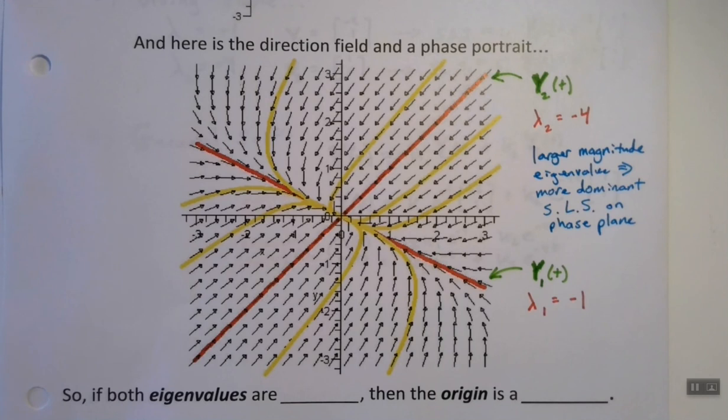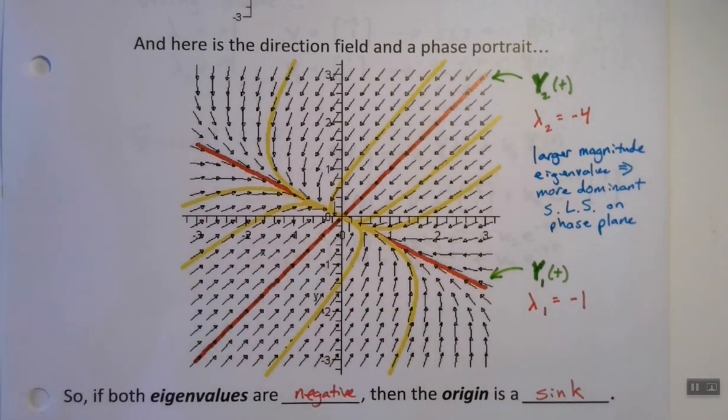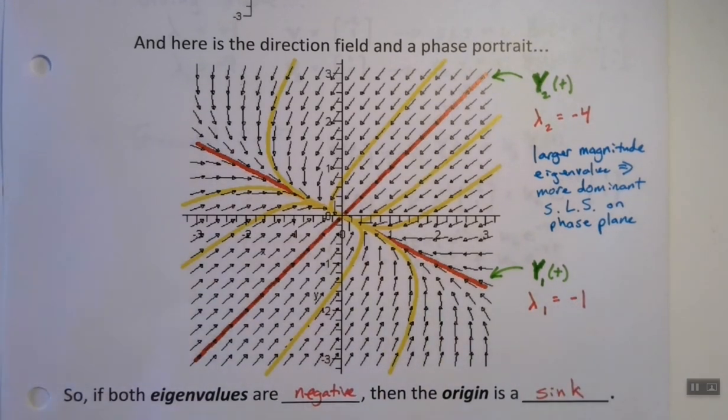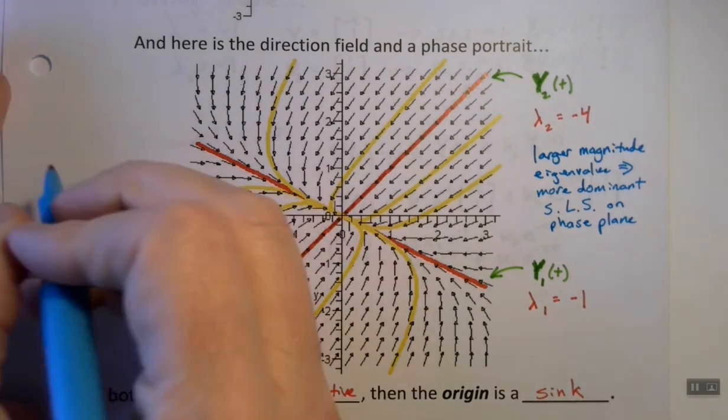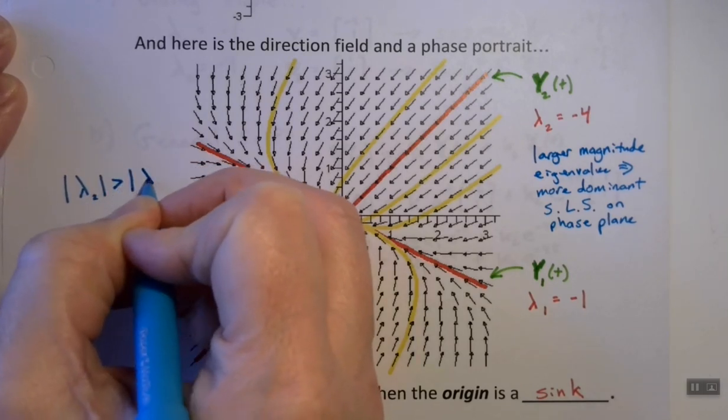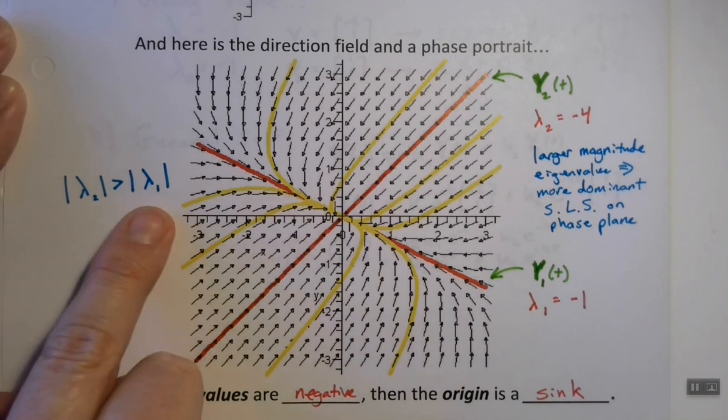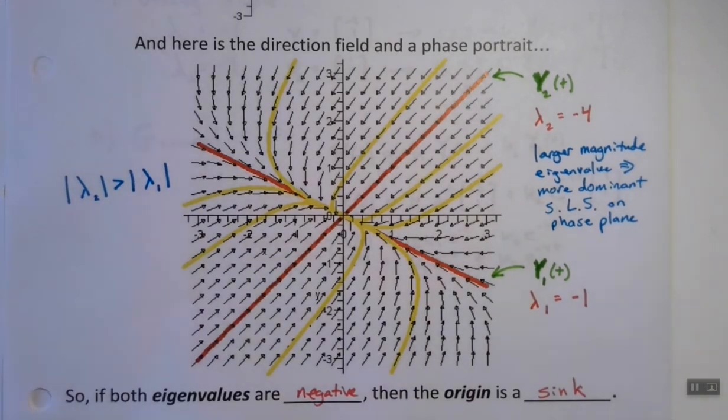Larger magnitude eigenvalue implies more dominant straight-line solution on the phase plane. So down at the bottom, if both the eigenvalues, as they are in this case, are negative, then that means the origin, as you can see on this particular phase portrait, is a sink. All roads lead to the origin, I guess you could say. So a simpler way maybe of writing this out, a more, that's what I'm looking for, symbolic way of writing it, is the magnitude of lambda 2 is greater than the magnitude of lambda 1. So sometimes you'll see it written this way, right? The magnitude of one eigenvalue is larger than the magnitude of the other, and that's telling us the same thing over here. So we've seen our first kind of general case. When you have two negative eigenvalues, that tells you something about the phase plane itself.